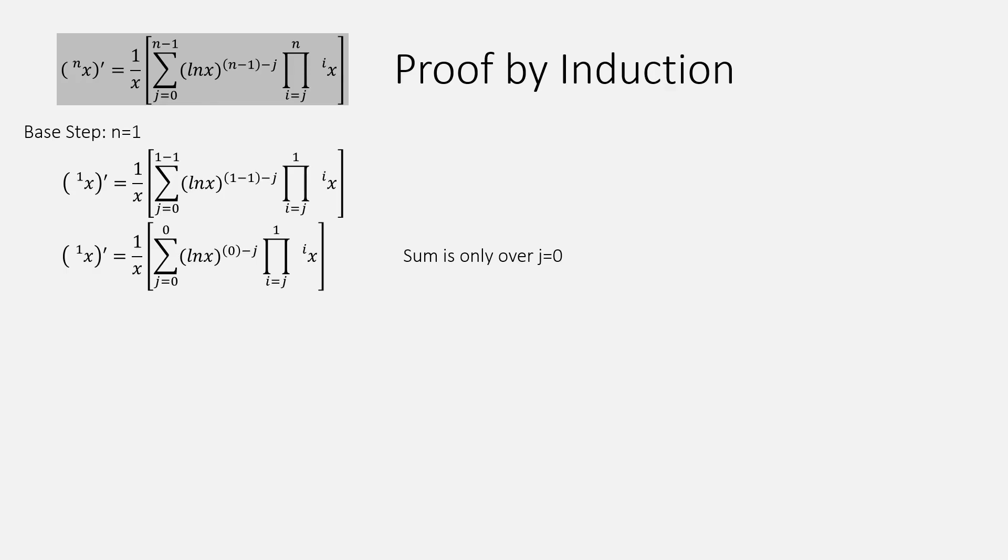Whenever the lower and upper limit of a summation are the same, the summation symbol becomes redundant. And we can drop it. And replace all the j's in the summand by 0. We agree for now that ln x to the 0 is 1.